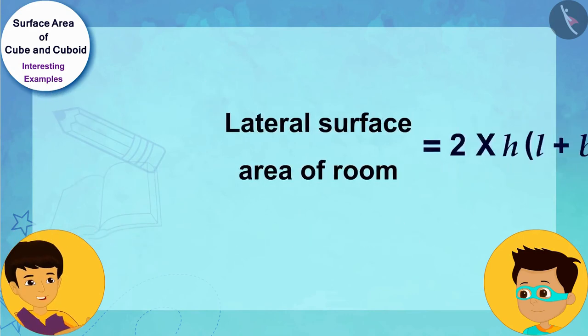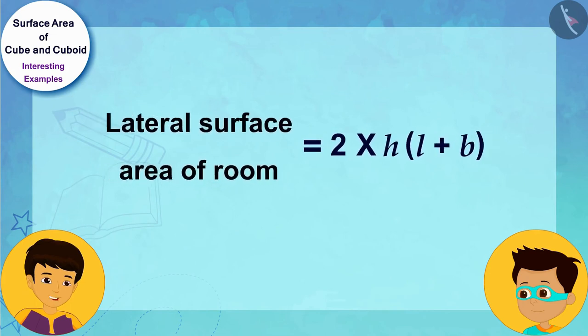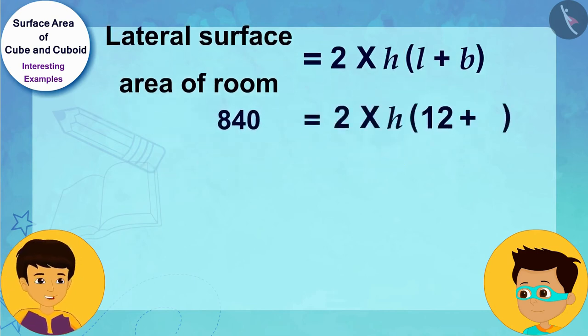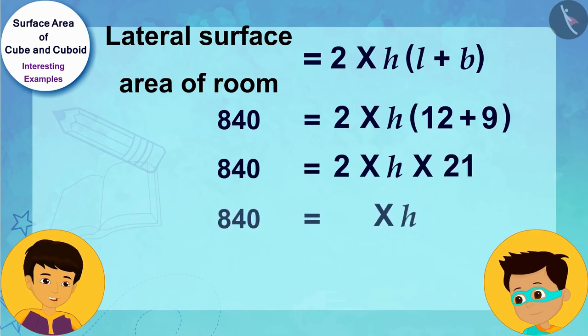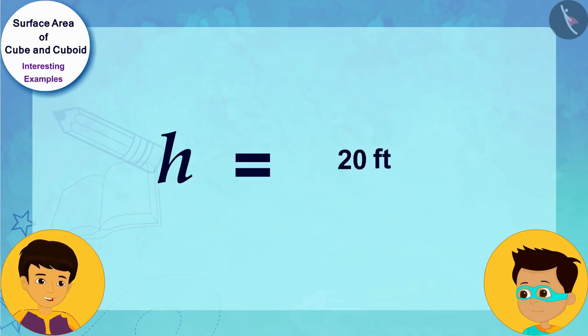In this way using the formula of the lateral surface area of the cuboid, after solving it in this way we came to know that the height of the room is 20 feet.